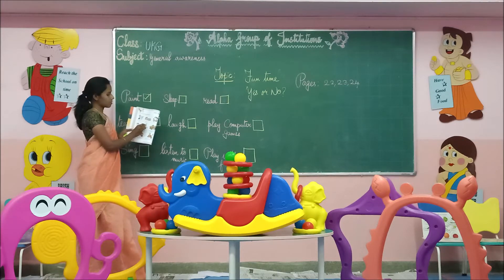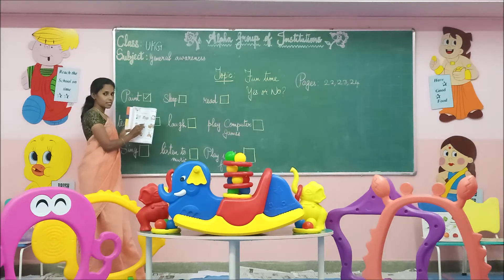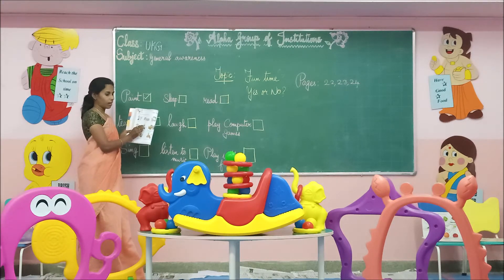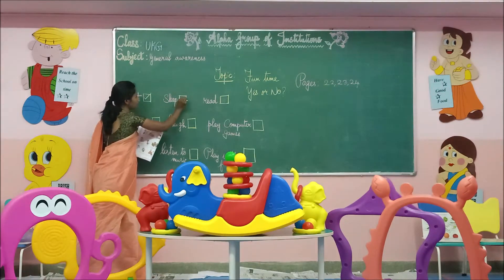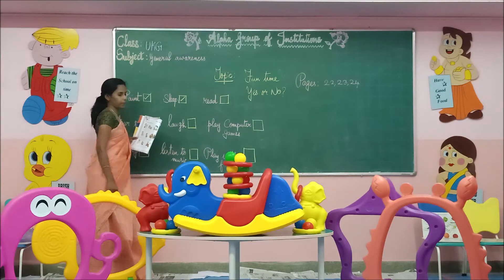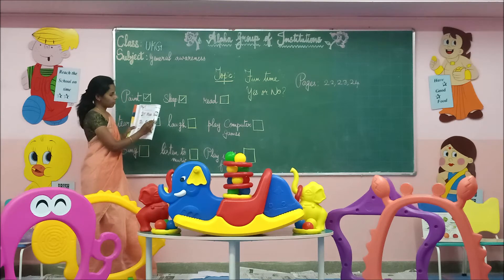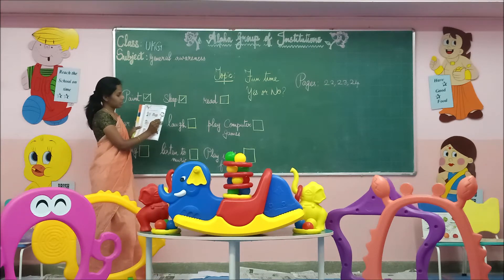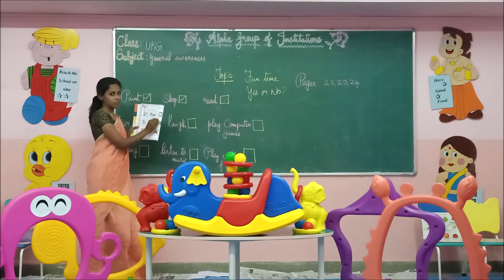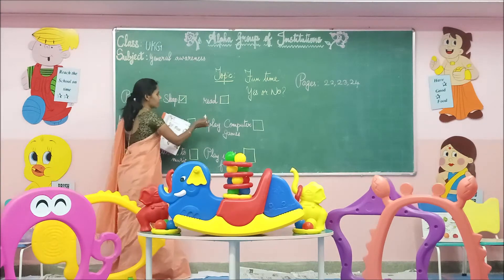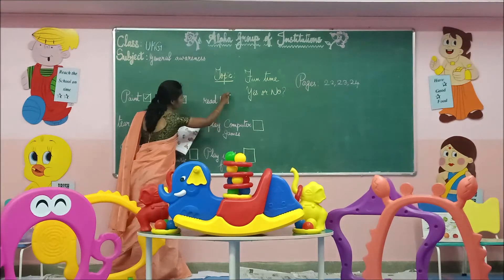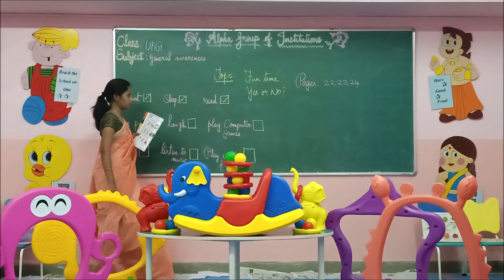Next, what is the next activity? Sleep. Do you all like to sleep? Yes, you need enough rest. You have to sleep — you do the activity of sleeping. What's the third one? Read. See, a girl is reading a textbook. Do you all like reading? Good. Put a tick mark near the box given here.